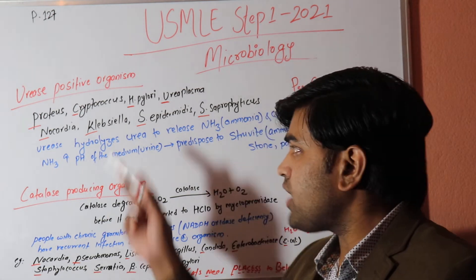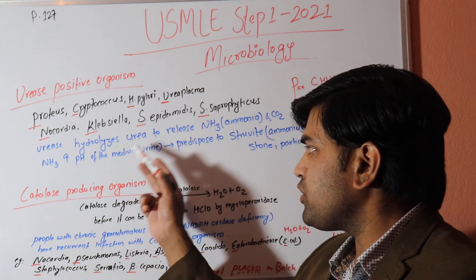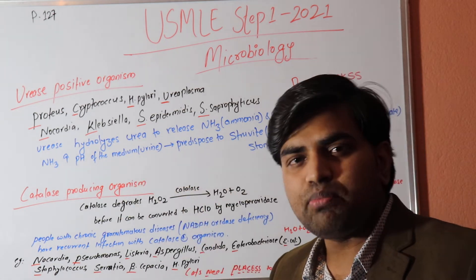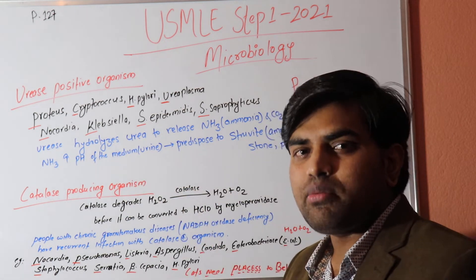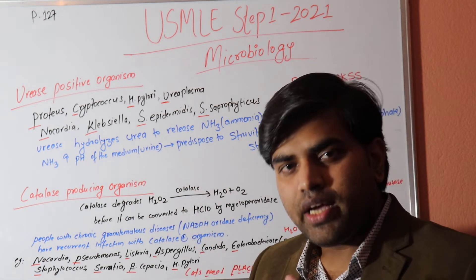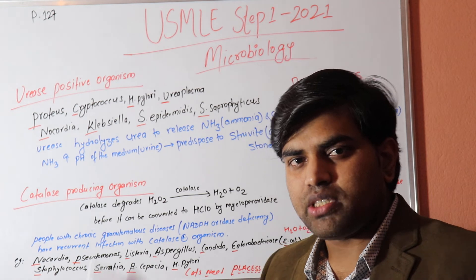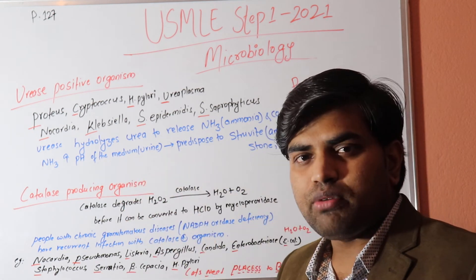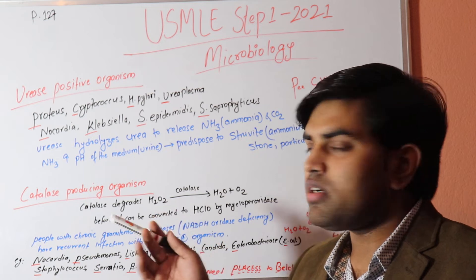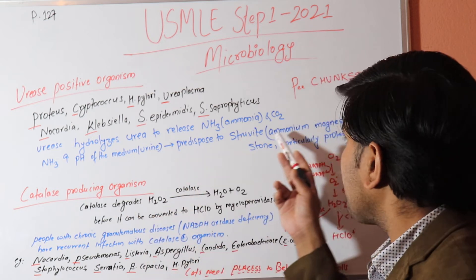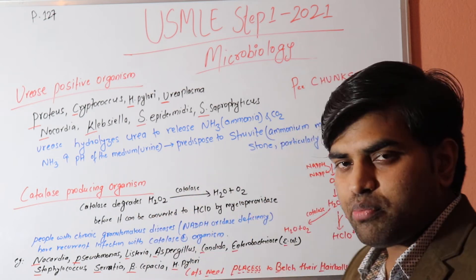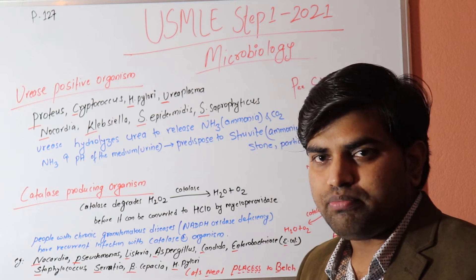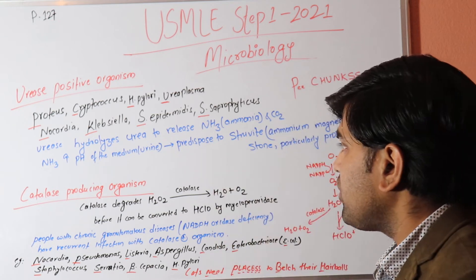The urease enzyme breaks down urea into ammonia, which increases the pH of the medium. Normally urine is acidic, but with increased pH the urine becomes alkaline. This predisposes ammonium magnesium phosphate to deposit and form stones.